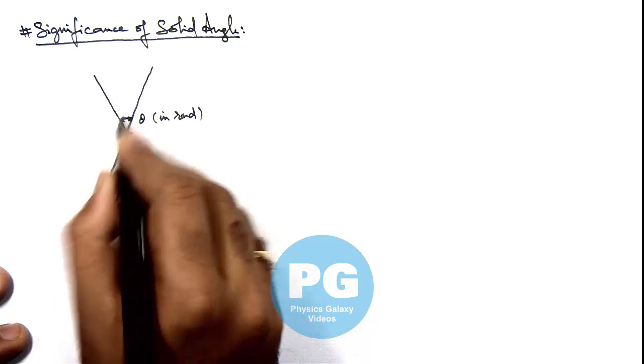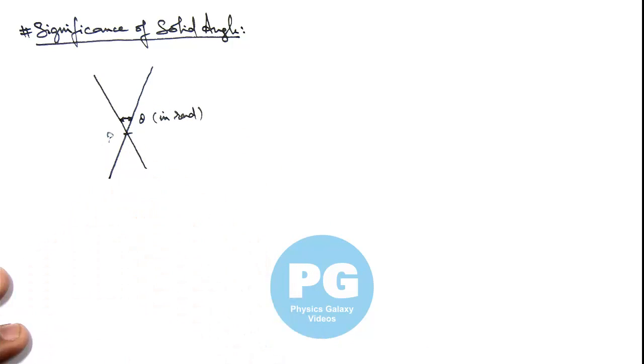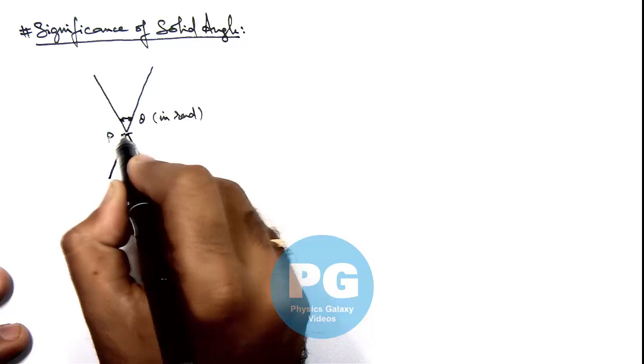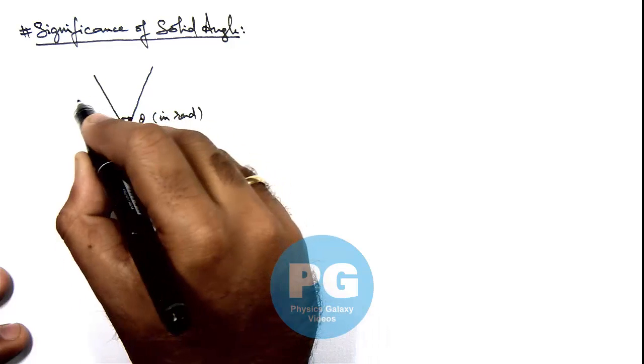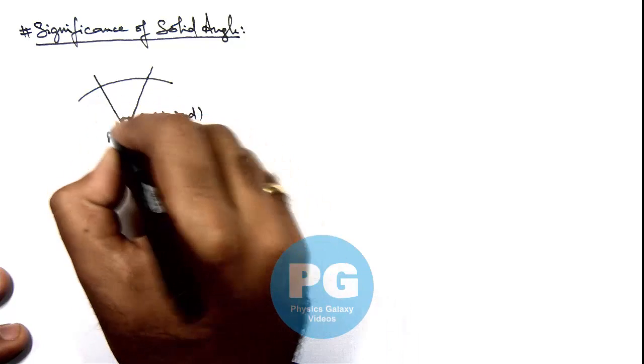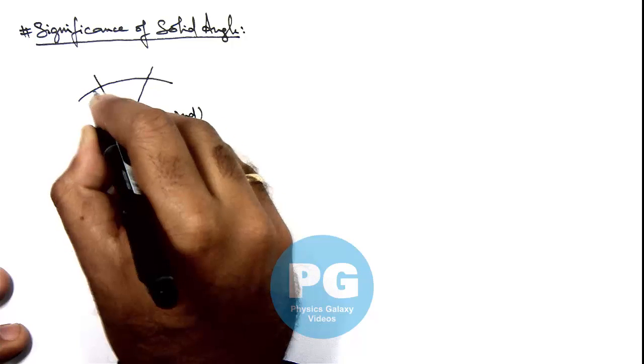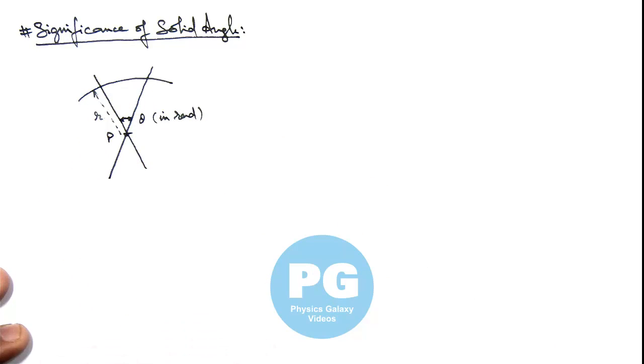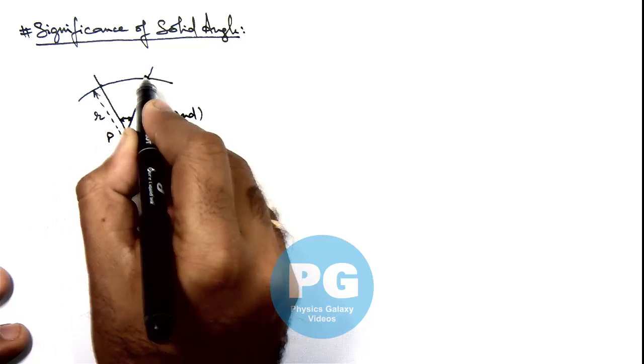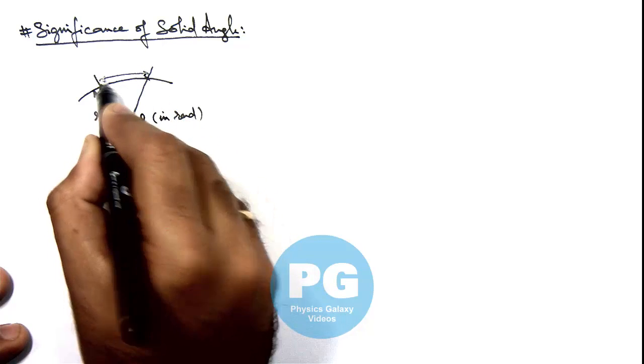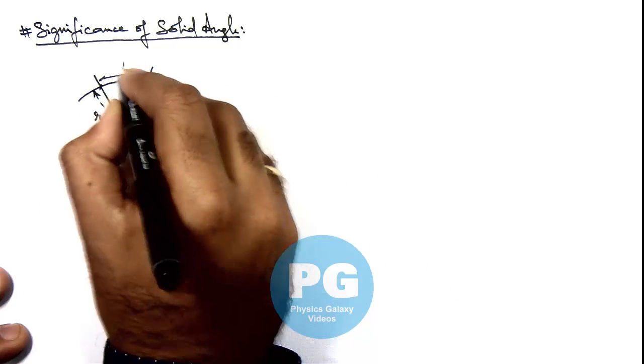Now if the point of intersection is P, and if we draw a circular arc by considering point P as center like this, such that the radius of this arc is r, then what would be the length of arc between these two lines? I think all of you are able to tell me the length of arc. If it is l...